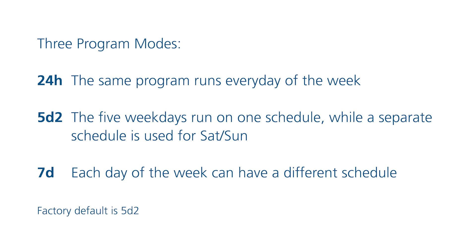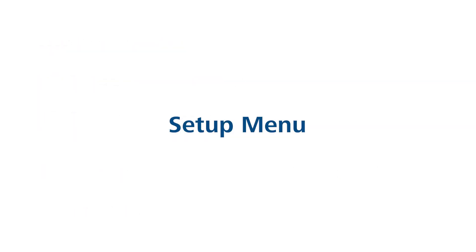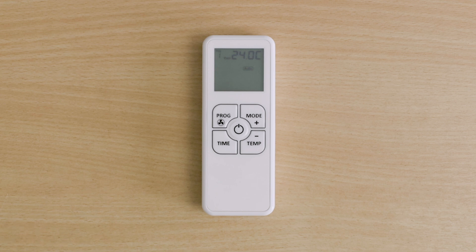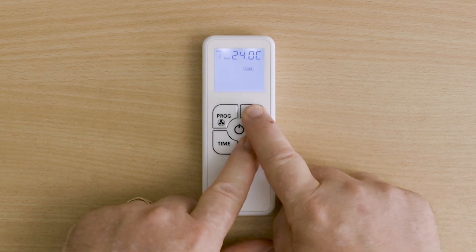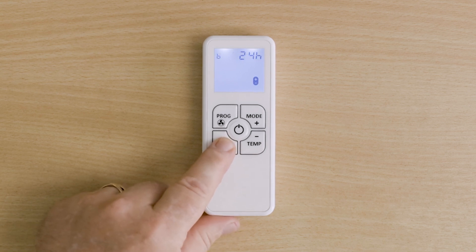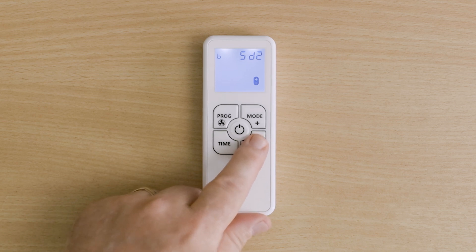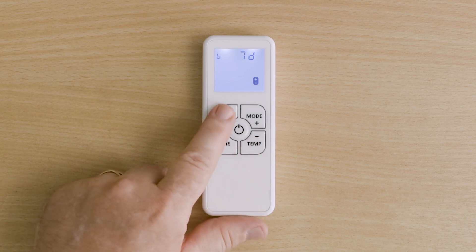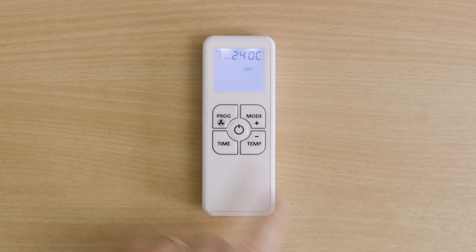Each program can be broken down into up to six different time periods, each with its own temperature setting. Once you have decided which of the three programs you want to use, go into the setup menu and select it. Press and hold temp and mode for five seconds, use the time button to cycle through the menu to option B, then use plus and minus to switch between the three options. Once you have selected the preferred program, press program to exit to the main screen.